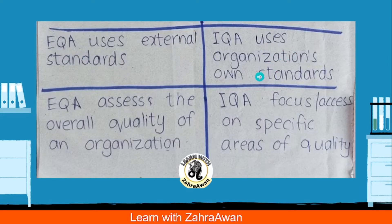Further differences: EQA (external quality assurance) uses external standards, but IQA (internal quality assurance) uses the organization's own standards and protocols. For example, if we have an industry with its own formula to make products, external quality assurance protocols are decided at international level by a third-party authority, while internal quality assurance allows one industry to use its own protocols and standards.